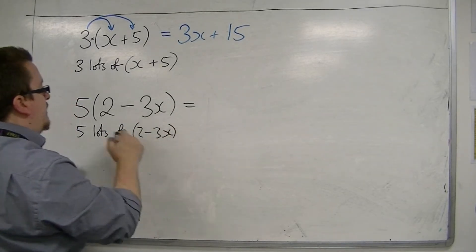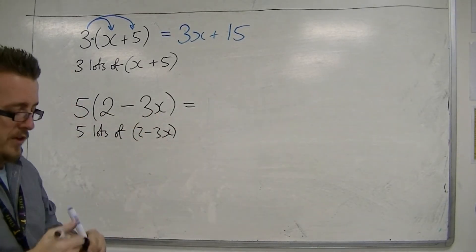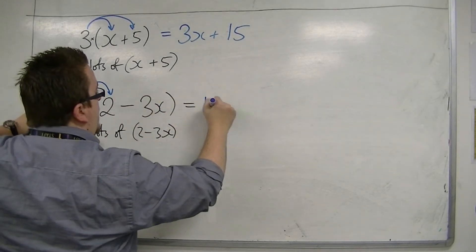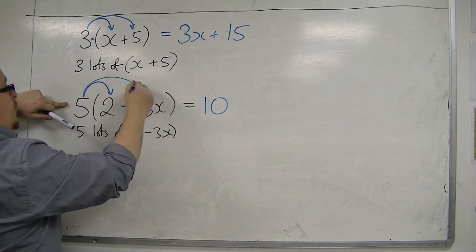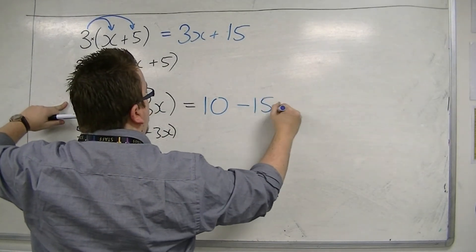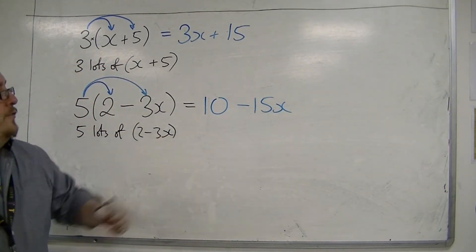So I'm multiplying the 5 by whatever's inside the bracket. I've got 5 times the 2, which I know is 10. And then I've got 5 lots of the minus 3x, would be minus 15x. Okay? So this is the expanded form.